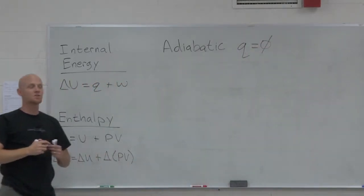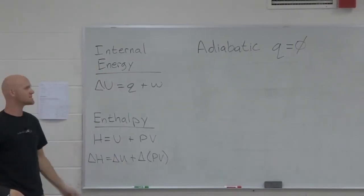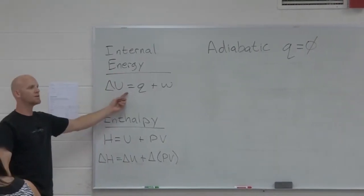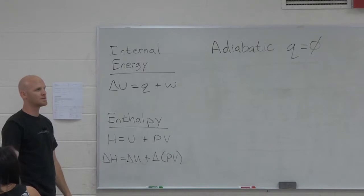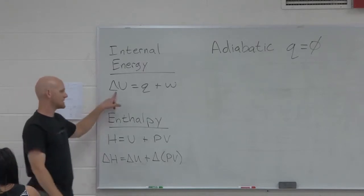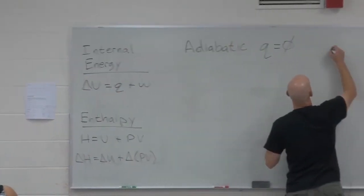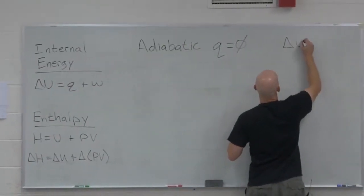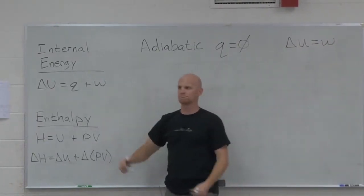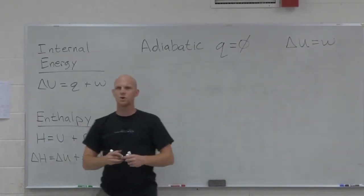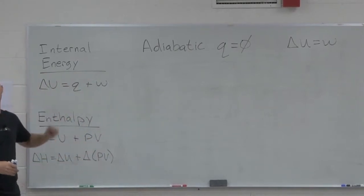Now we're going to extrapolate that. If I have an adiabatic process, what else would be true? Delta U equals W. Do you have to memorize that? No, derive it every time. You should know what the definition of adiabatic is and then be able to apply it.